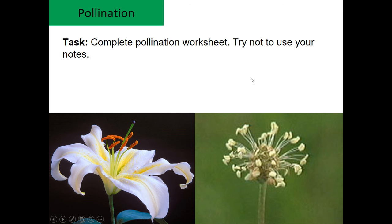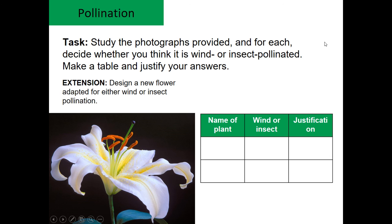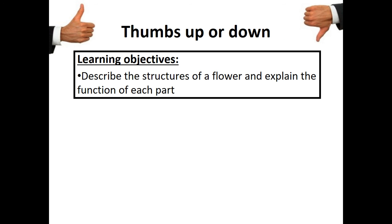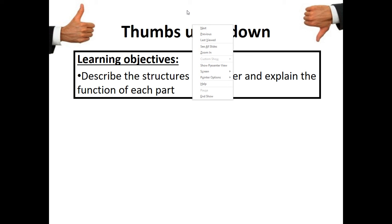Next lesson you're going to complete the worksheet on pollination so I can work out who's watched this video. Then we'll have another task looking at photographs so you can decide whether they're wind or insect pollinated flowers, and you'll make a table. Hopefully you've understood that — thumbs up for flowers, their structure, and pollination. If not, watch the video again. Remember there's a little quiz at the start of the lesson to make sure you've watched the video. That's it for your homework — make sure you've watched it and understood.